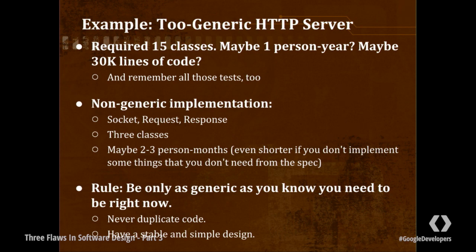But let's say that we did this more simply. What's the non-generic implementation? The non-generic implementation is three classes: socket, request, and response. How long is that going to take? Maybe two to three person months. And maybe even less if you don't implement the entire HTTP spec. The reason it's going to take that long is because HTTP is genuinely a complex thing to implement. But the work you'll be doing is all work that actually delivers value to the user. Those two to three months are all valuable time, as opposed to the other eight or nine months spent making this thing generic — and ultimately, the product delivered is identical.